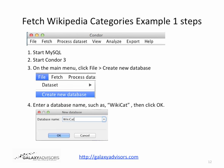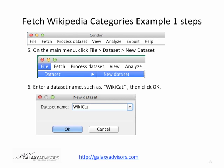Step 1: Start MySQL if you have not already started. Step 2: Start Condor 3. Step 3: On the main menu click File, Create New Database. Step 4: Enter a database name such as Wikicat. The important thing about a database name is that it's short, has no spaces, and no special characters, although you can use the underscore. Click OK. Step 5: On the main menu click File, Dataset, New Dataset. Enter a dataset name such as Wikicat, then click OK — same rules apply: short, no spaces, no special characters, though underscore is allowed. Click Next.